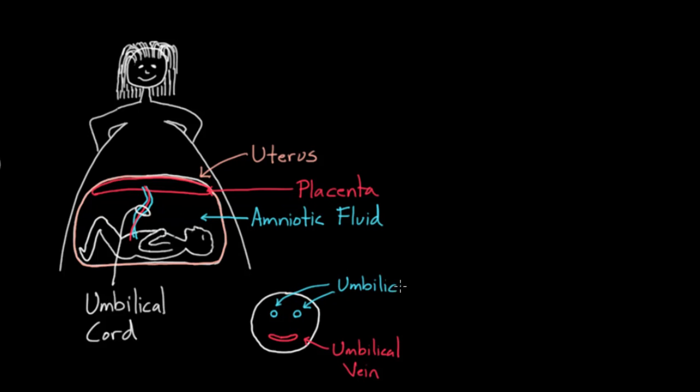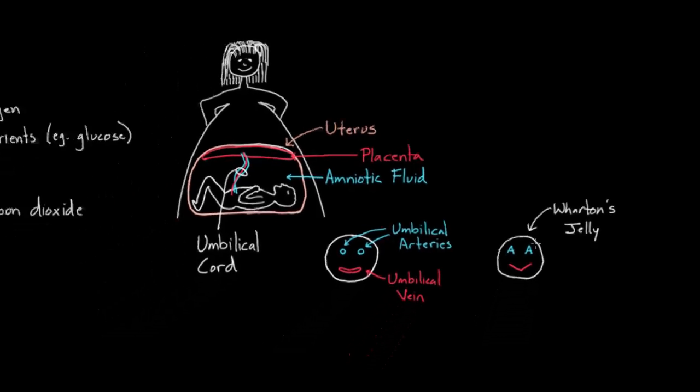They're called umbilical arteries because they're going away from the heart. The umbilical arteries and umbilical vein are not just freely floating out there. They're actually encased in this jelly called Wharton's jelly. I'm going to redraw this to show you how I remember this. I think of the mouth as a vein or a V, and I think of the eyes as two little As. That's my little trick for remembering that there are two umbilical arteries and one umbilical vein, all encased in Wharton's jelly. This is the umbilical cord.